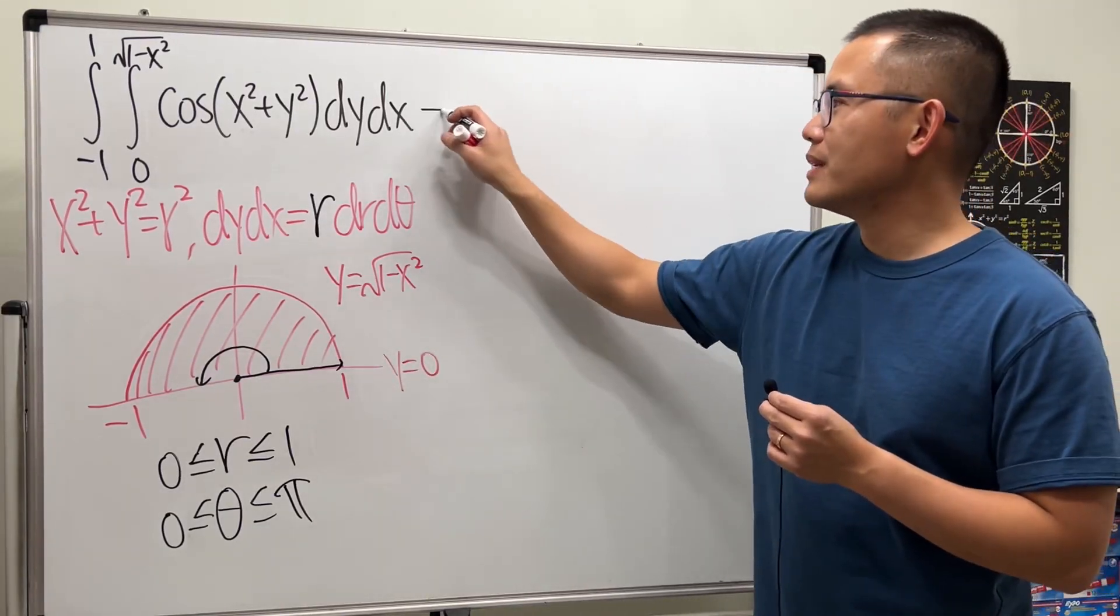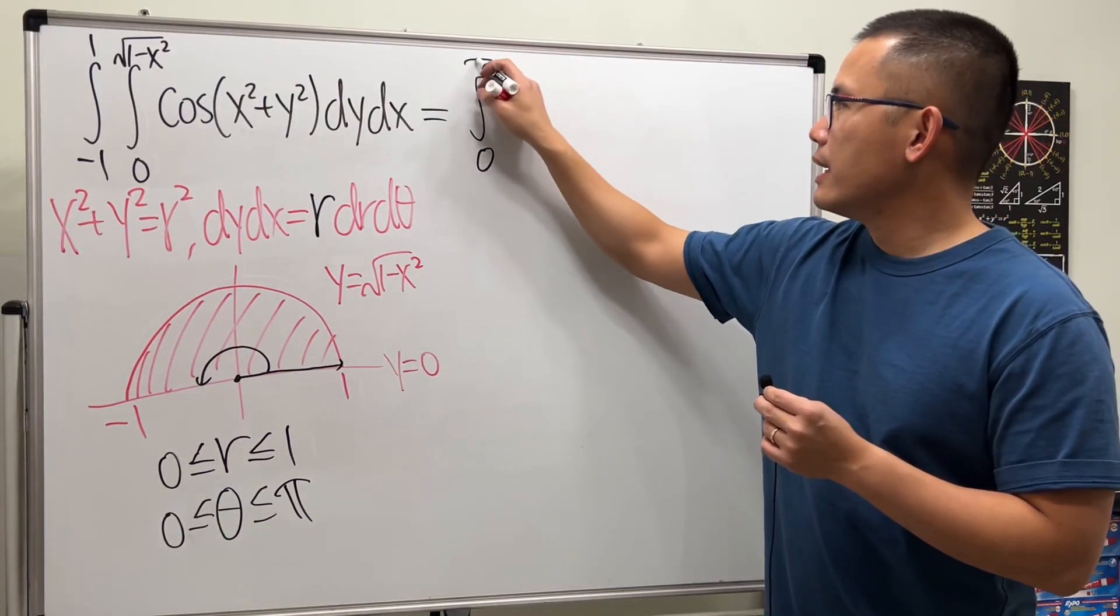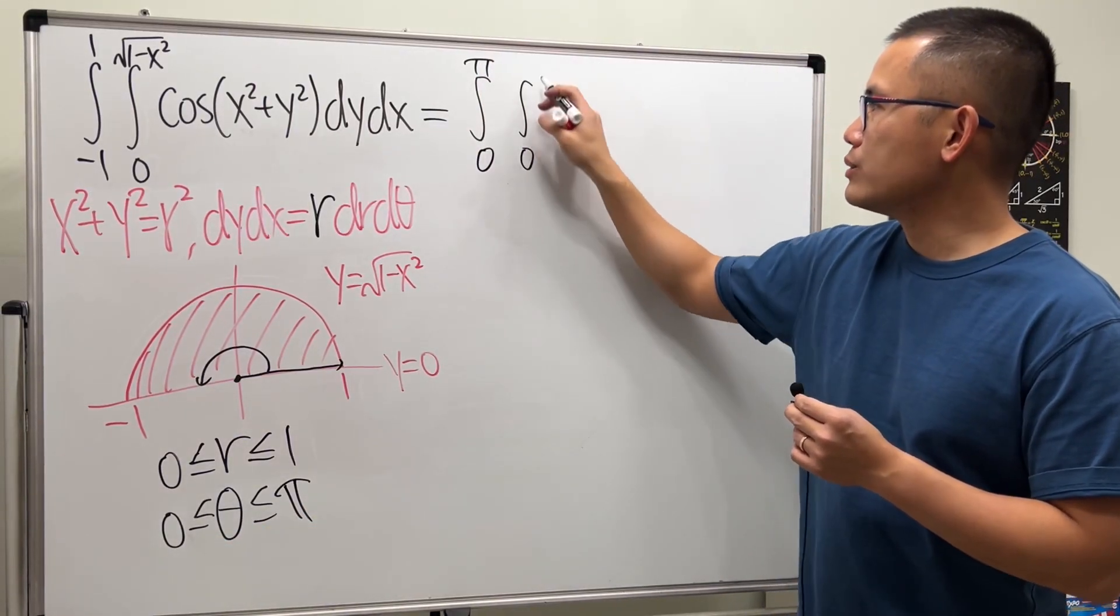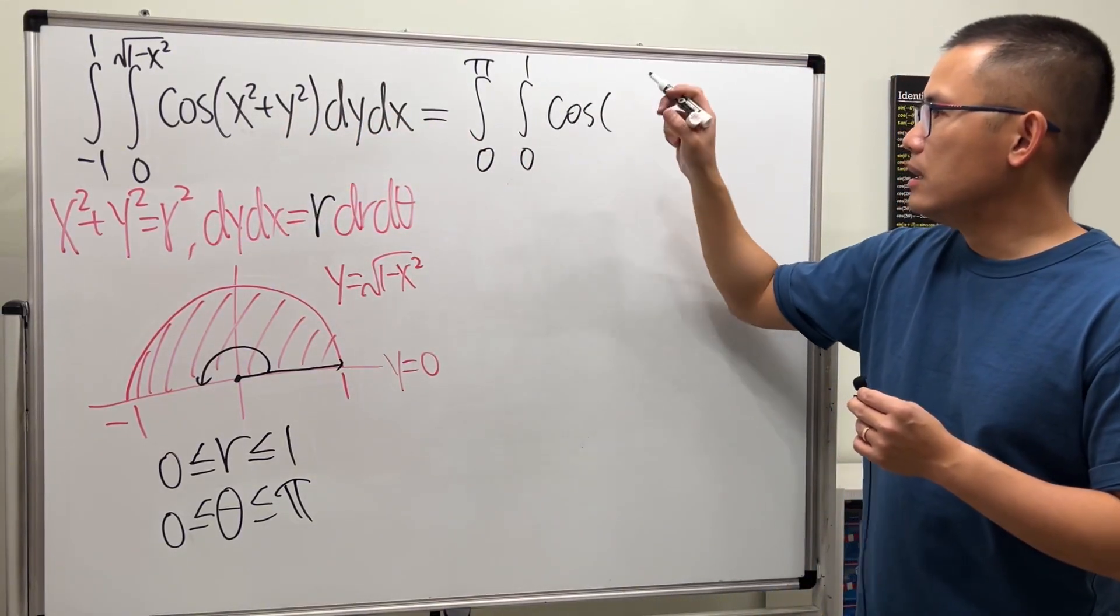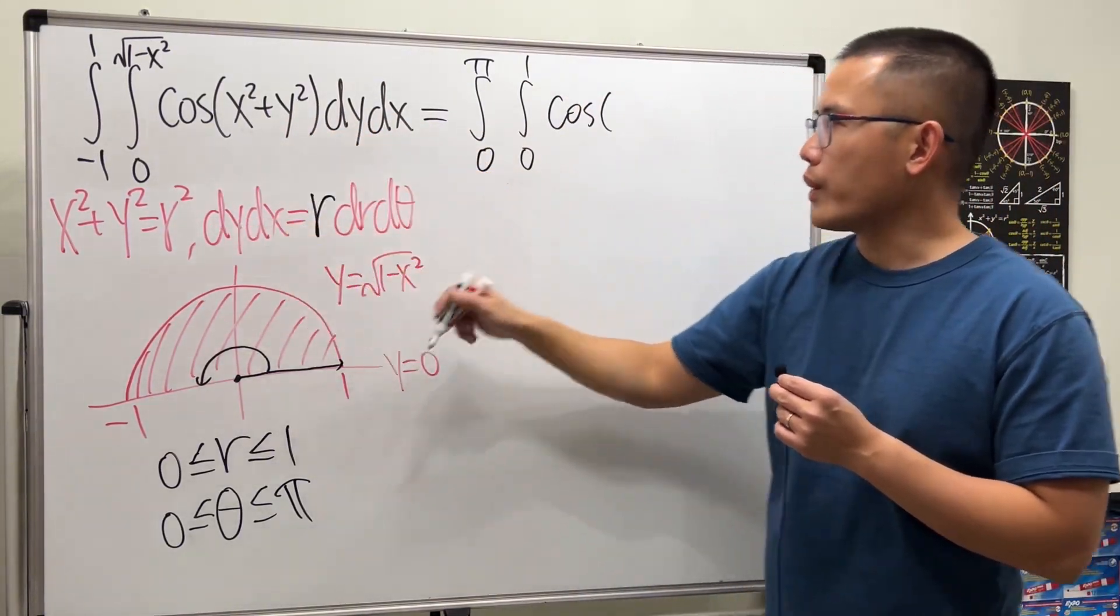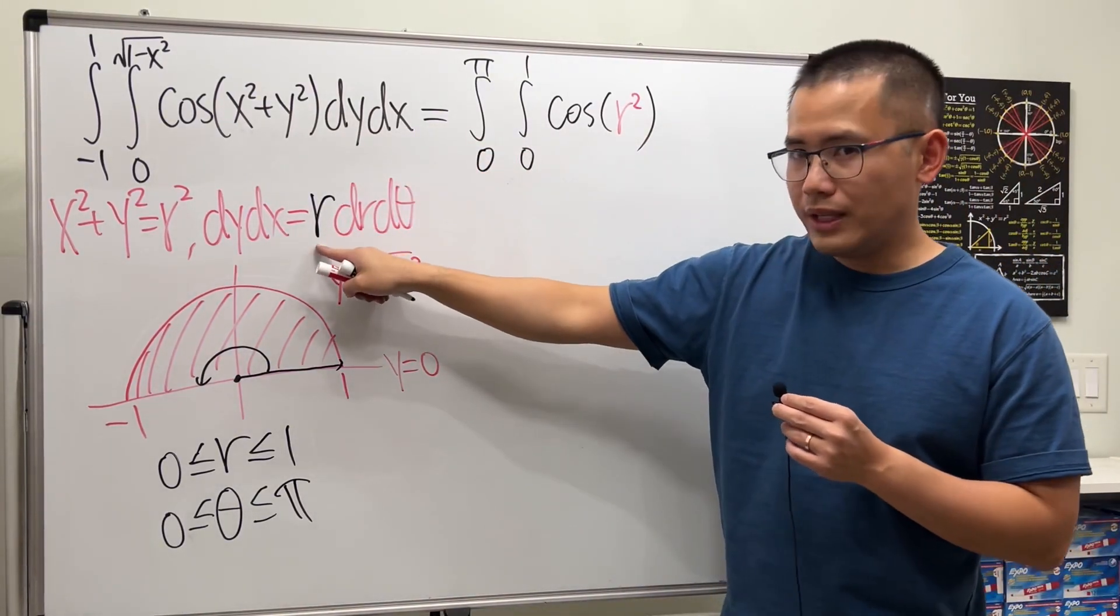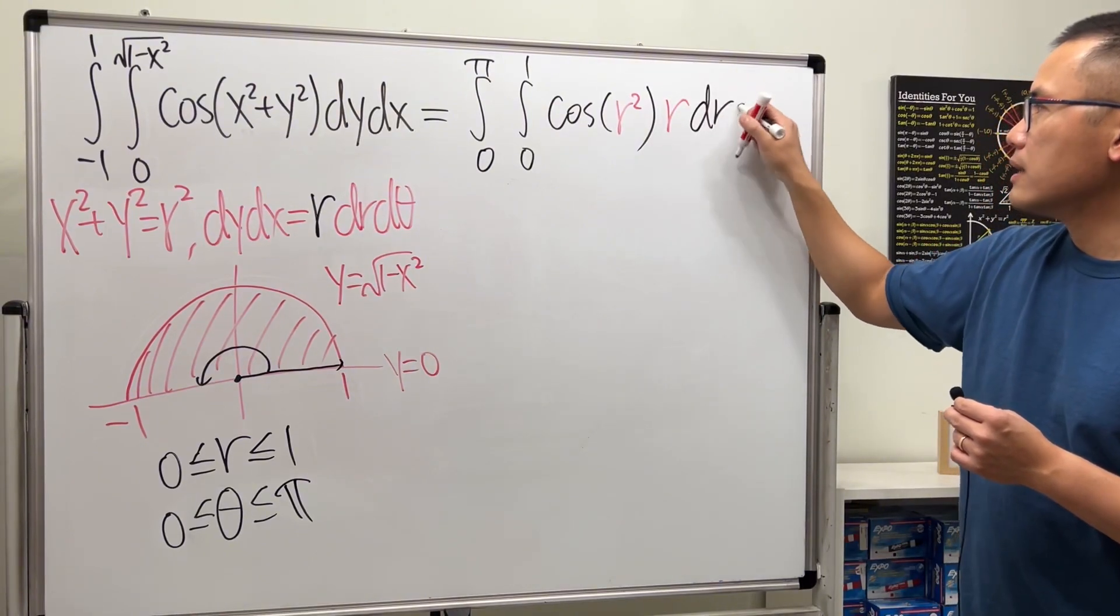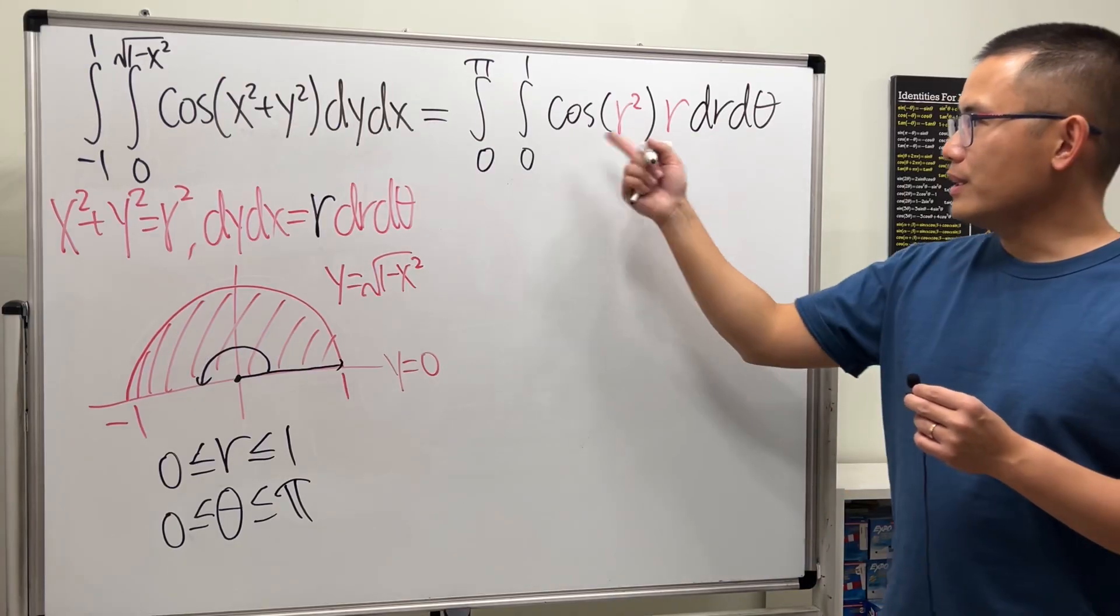Now we can take this to the polar world. Let's say we have θ on the outside going from 0 to π, r on the inside going from 0 to 1. Then here we have cosine of x squared plus y squared, which is r squared. dy dx here becomes r, and then dr dθ.